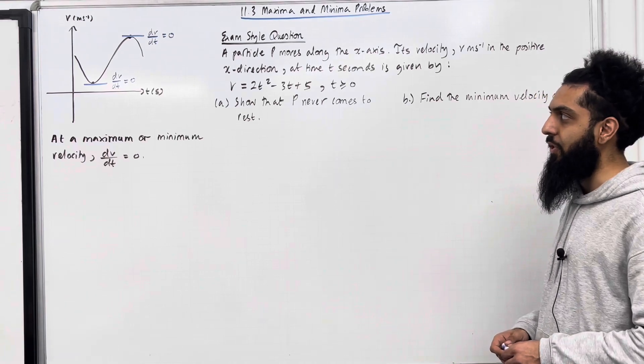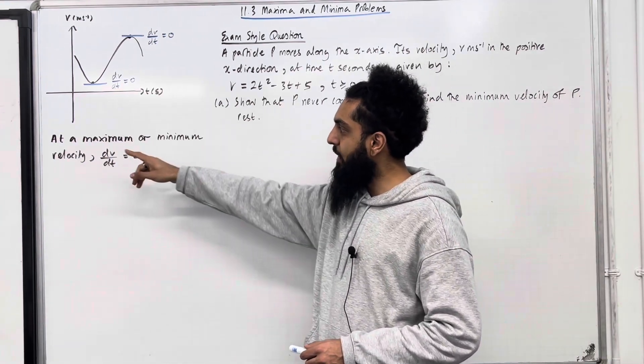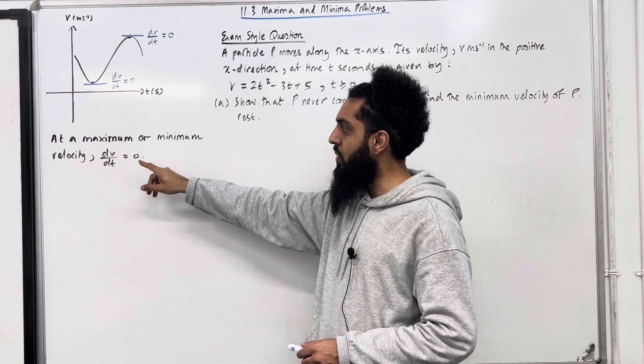Let's have a look at the key facts of this section. Consider the following velocity-time graph. At a maximum or minimum velocity, dv/dt is equal to 0.